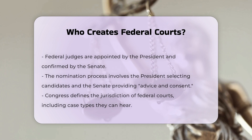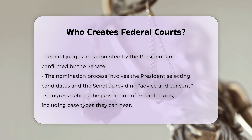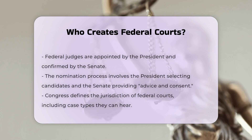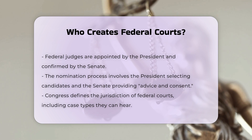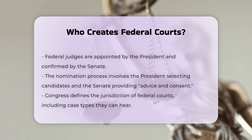Appointment of Judges. The judges who serve on these federal courts are appointed by the President and confirmed by the Senate. This process applies to judges on the district courts, courts of appeals, and the Supreme Court. The President nominates candidates, and the Senate provides advice and consent before the nominees can take office.